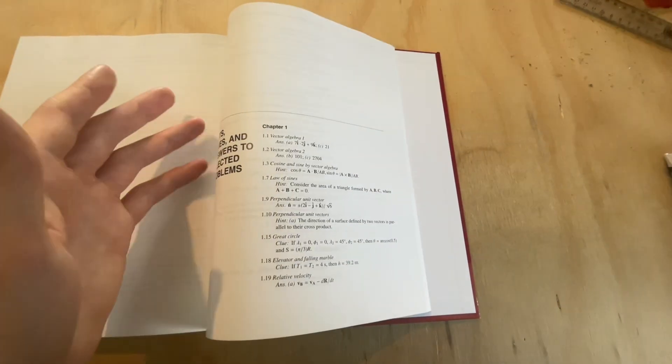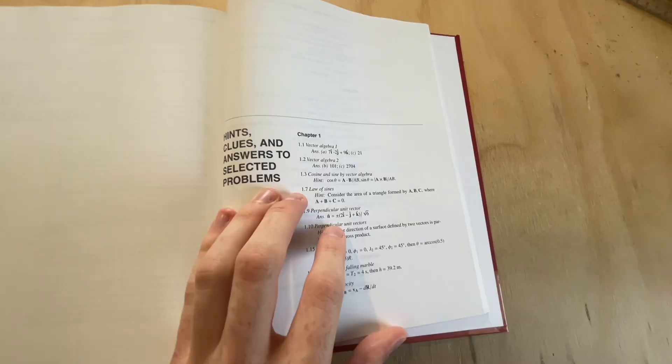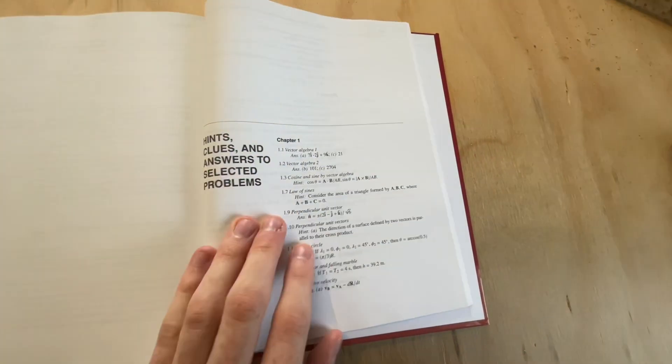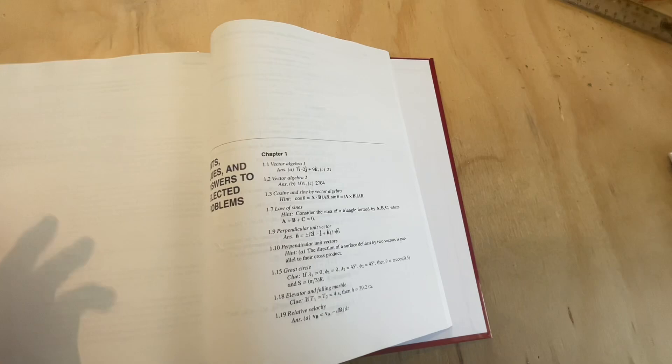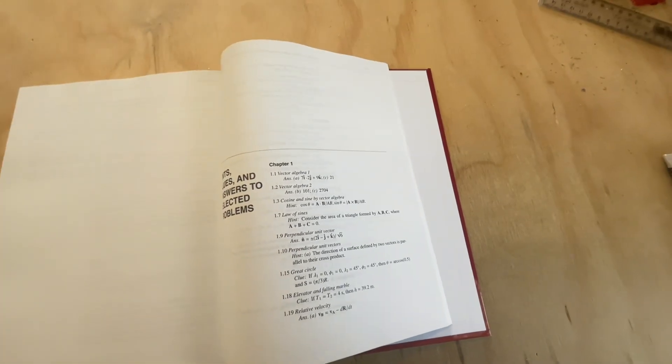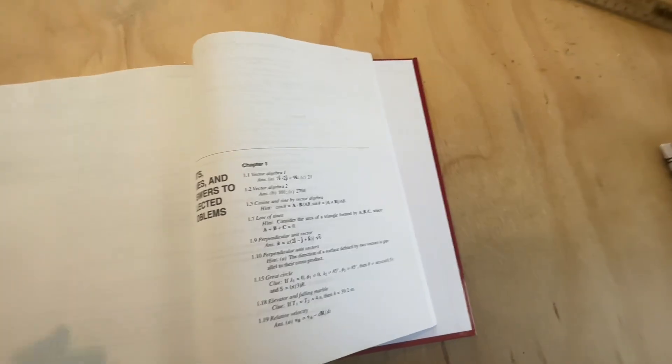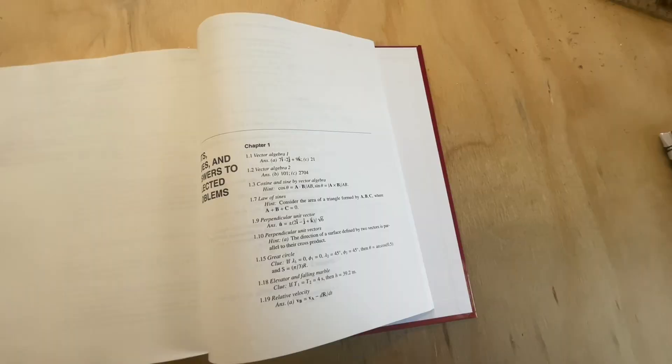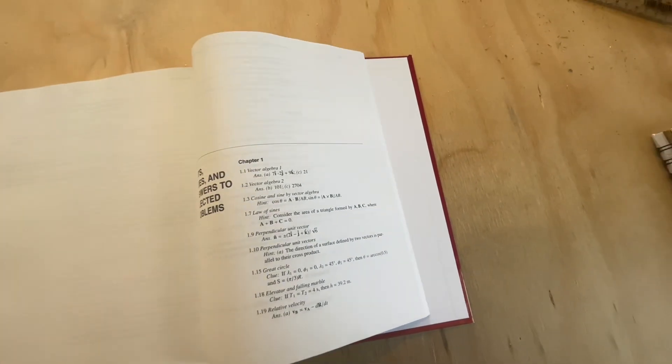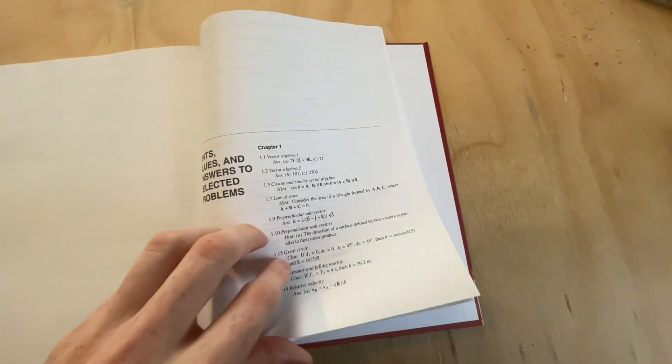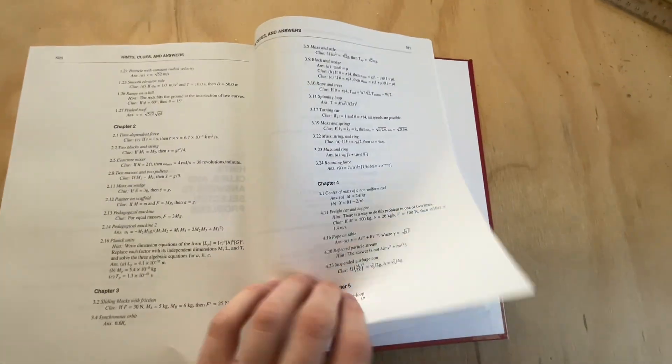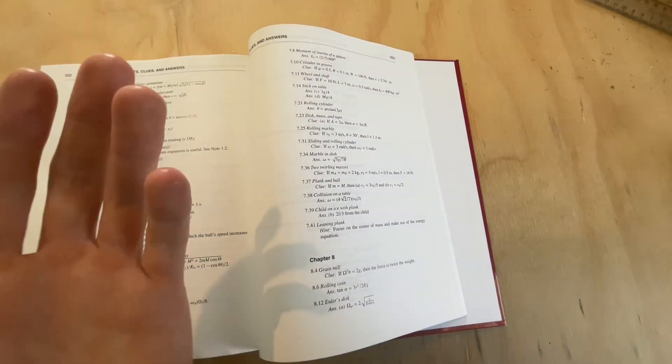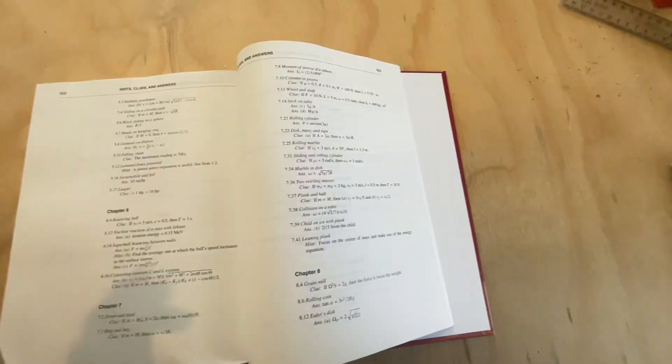And of course, as I said, the back of the book has hints, hints and clues and some answers to the selected exercises. And I really like this because having full solutions is a bonus, but at the same time, it's really nice to just be able to work on problems and have hints if you need them, but not be tempted by the full solutions. So as you can see, it's not very long. It just got a few selected questions per chapter where it might give you a hint or an answer, but it will not show you all the working.